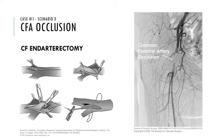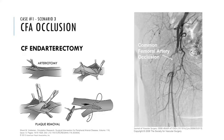The common femoral is quite superficial in the groin and easily accessible. Endarterectomy involves making a longitudinal incision in the artery through which a plaque is separated and removed. The arteriotomy is ideally closed with a vein patch, or if no suitable veins are available, a bovine or synthetic patch can be used — called patch angioplasty. The patch widens the artery lumen and reduces the risk of restenosis from intimal hyperplasia.